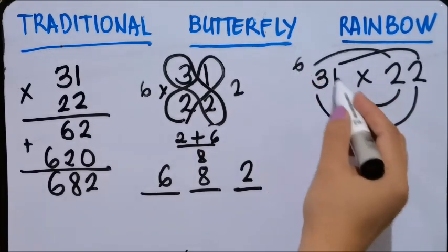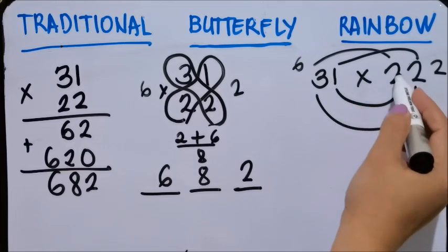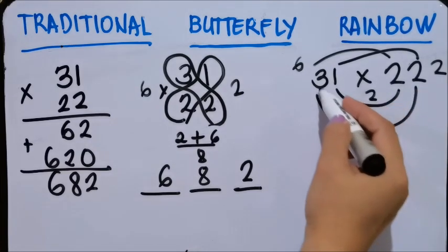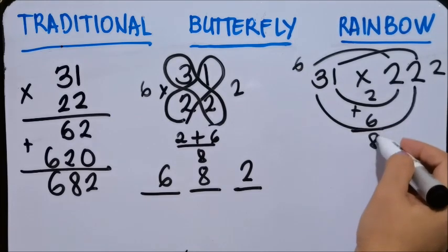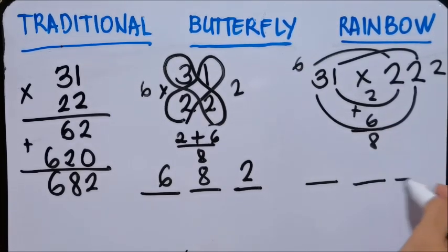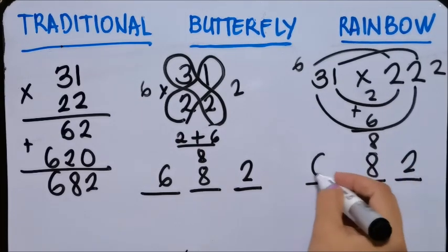So 3 times 2 is 6, 1 times 2 is 2, 1 times 2 is 2, 3 times 2 is 6. You add this one which is 8. Putting it together, 682. See the difference?